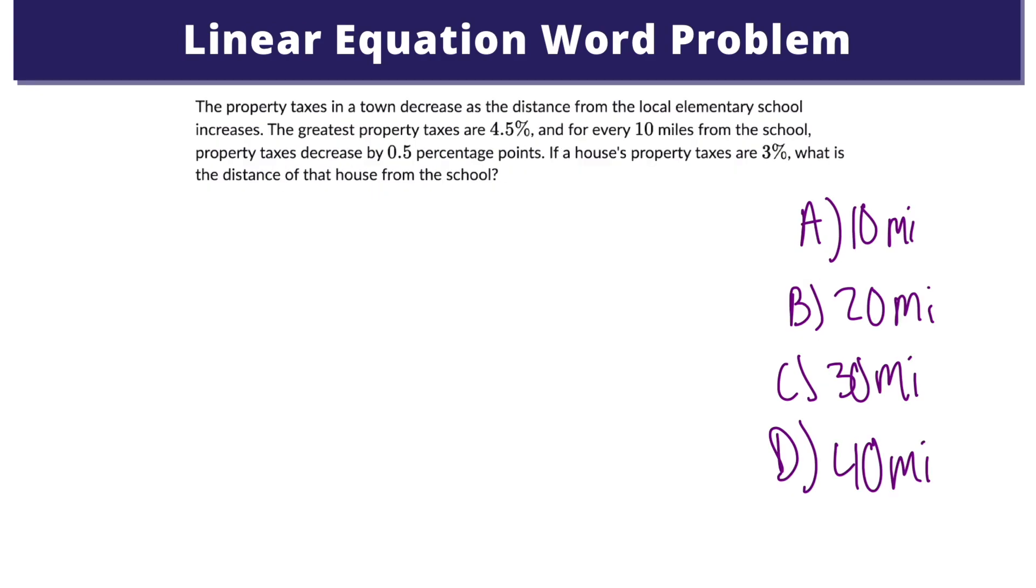In this second example, it wants us to find the differences in property taxes. So let's allow d to be the distance between the house and the school. Since d is distance, it's always positive. It tells us that property taxes decrease by 0.5 percentage points for every 10 miles from the school. So we can write that as 0.5 times d divided by 10.